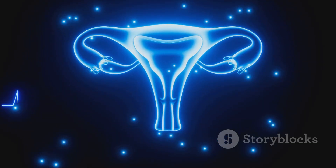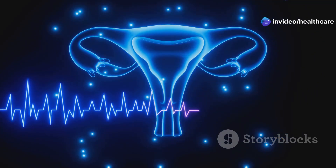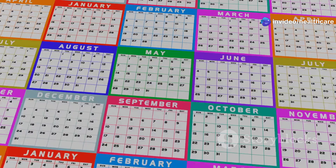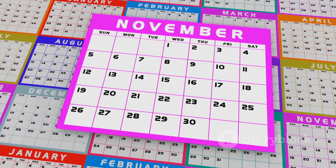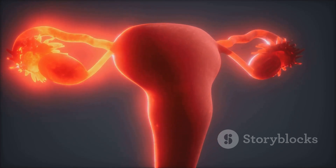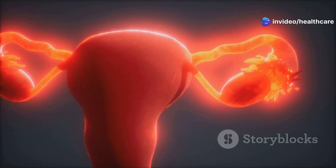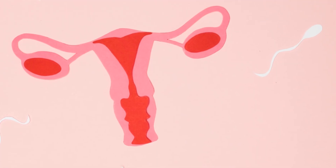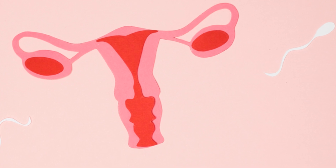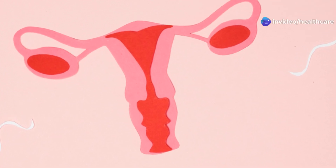Ovulation is intricately tied to the menstrual cycle — a complex series of hormonal changes that occur in a woman's body each month. It typically happens around the midpoint of the cycle. The menstrual cycle can be roughly divided into two phases: the follicular phase leading up to ovulation and the luteal phase after ovulation. The entire cycle can range from 21 to 35 days, with 28 days being the average.